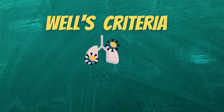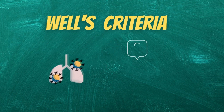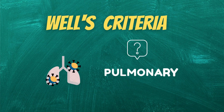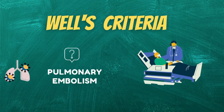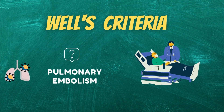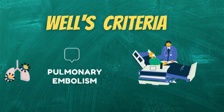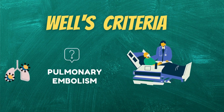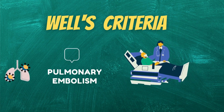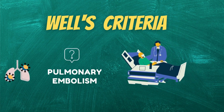The Wells criteria for pulmonary embolism is a risk stratification score used to predict the likelihood of acute pulmonary embolism in individuals whose medical history and physical examination indicate that acute PE could be a probable diagnosis.